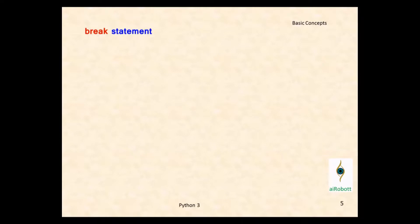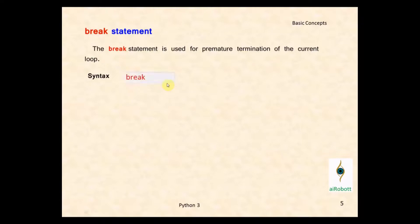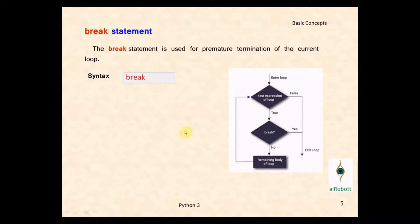The break statement is used for premature termination of the current loop. After abandoning the loop, execution of the next statement is resumed, just like the traditional break statement in C. This is the syntax for the break statement: break. This is the flow diagram: when the test expression is false, the loop will exit. If the test expression becomes true, it goes to the next statement. When the break is encountered, it exits the loop; if not encountered, the remaining body of the loop will execute.